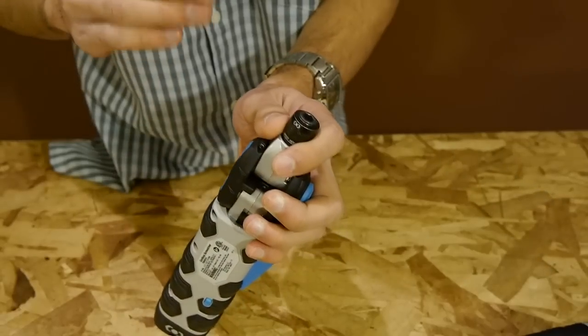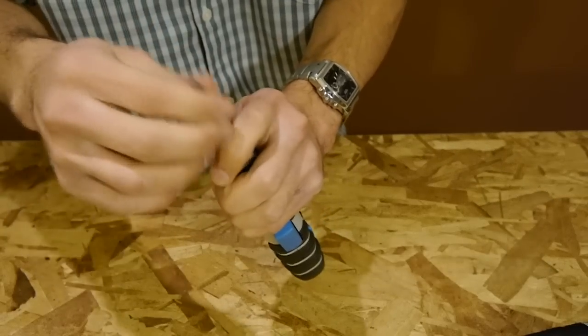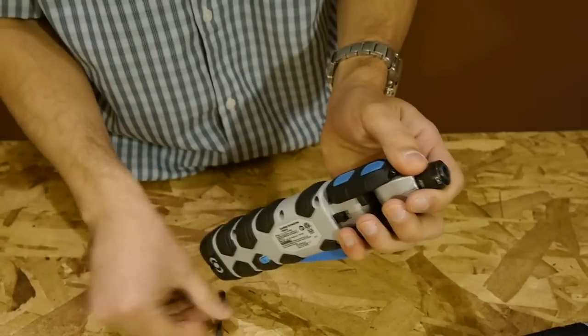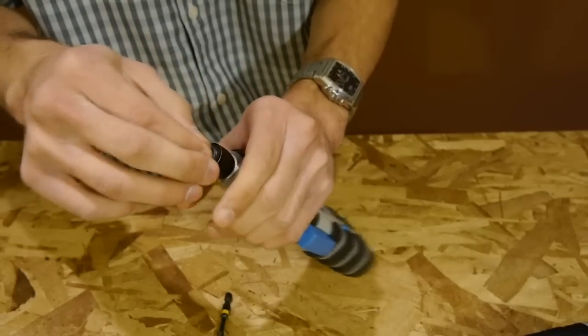To insert bits it uses a traditional quarter inch hex chuck with a sleeve that requires two hands to insert and remove bits. It can take regular 2 inch locking bits and it can even take regular 1 inch bits and lock onto them as well.